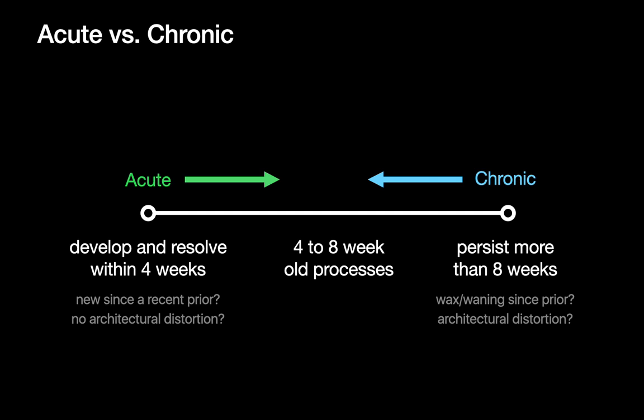As a reminder, we're going to use four to eight weeks as the threshold between acute versus chronic. In some reads, we'll be fortunate enough to have a prior study that informs us whether we're dealing with an acute or chronic consolidation. But there will be times where we don't have that, and we may rely on things like architectural distortion to bias us one way or the other. Sometimes we just won't be sure, and our differential diagnosis may have to expand to include possibilities from both buckets.